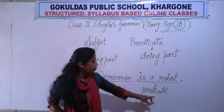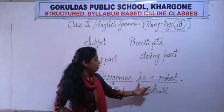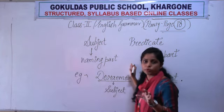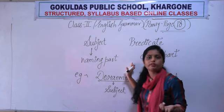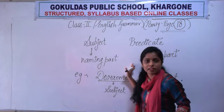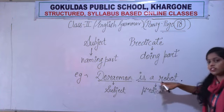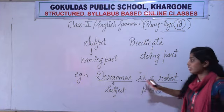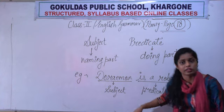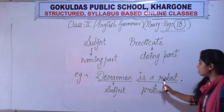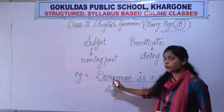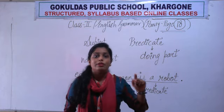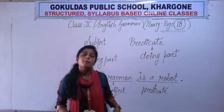Why is it the predicate? Because this part is telling us what the subject is. यह part हमें subject के बारे में बता रहा है. If I had written only Doremon, you would not know what we are talking about. But now it is clear that Doremon is a robot. This part tells us what the subject is or what the subject is doing. So 'is a robot' is the predicate part and Doremon is the subject. Now we are going to solve the exercise and with that, subjects and predicates will become more clear to you.